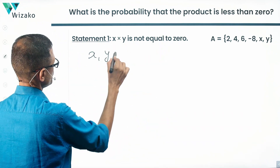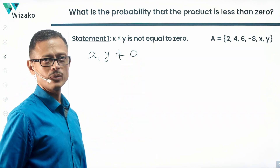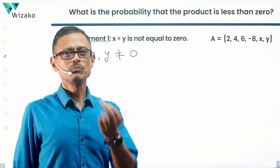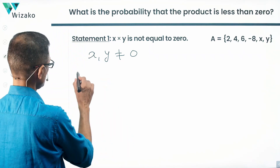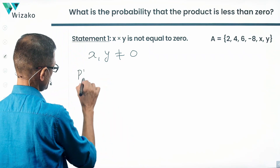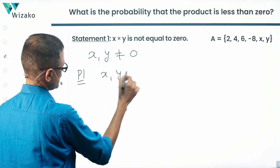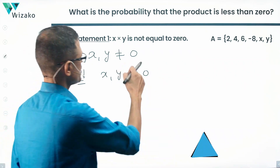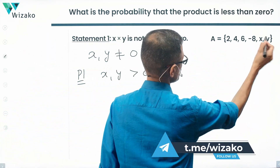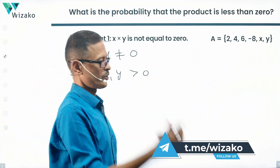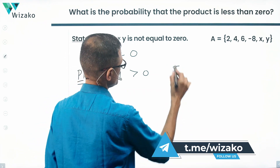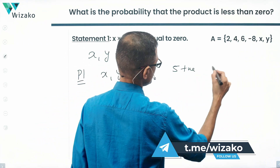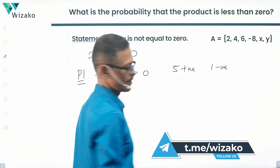Both X and Y are not zero. Possibility 1: both X and Y are greater than zero. In that case, 2, 4, 6, X, Y will all be positive — five positive numbers — and -8 will be the only negative number in the set.